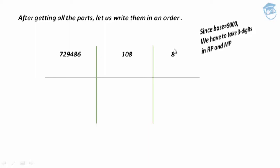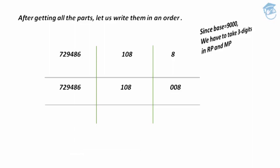The right part has only one digit, 8, so to make it three digits we add two zeros in front, giving 008. The middle part is 108, a three-digit number, written as is. The left part is 729486, which can have as many digits as needed. By combining all parts — left, middle, and right — we get the final answer: 729486108008.